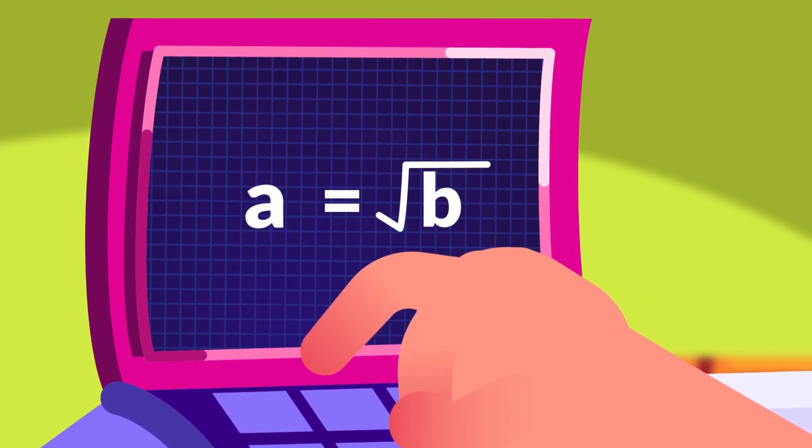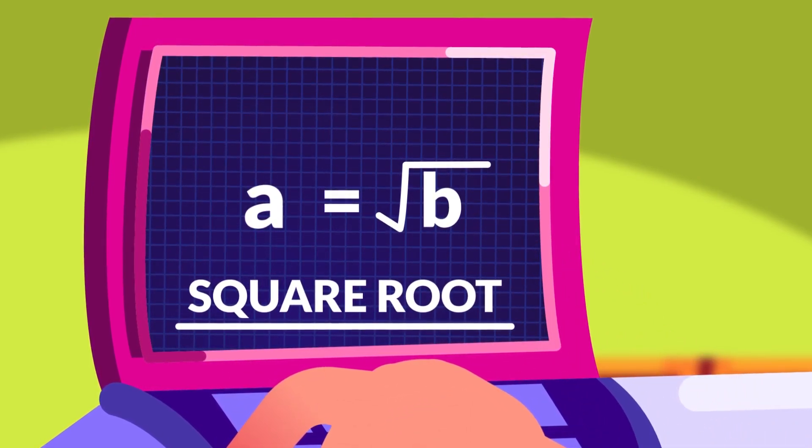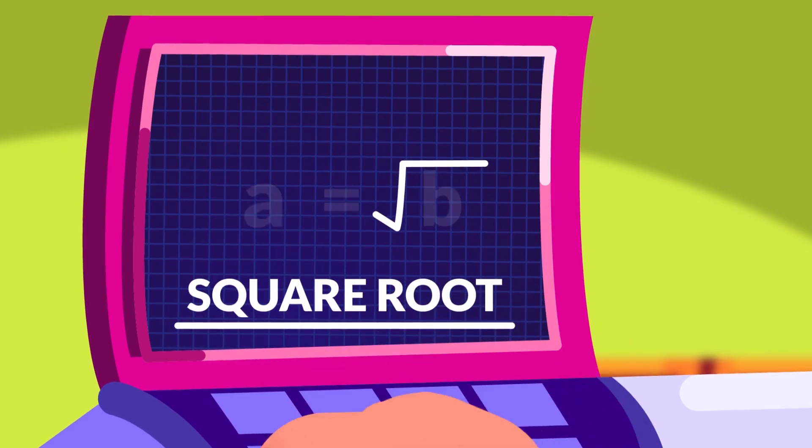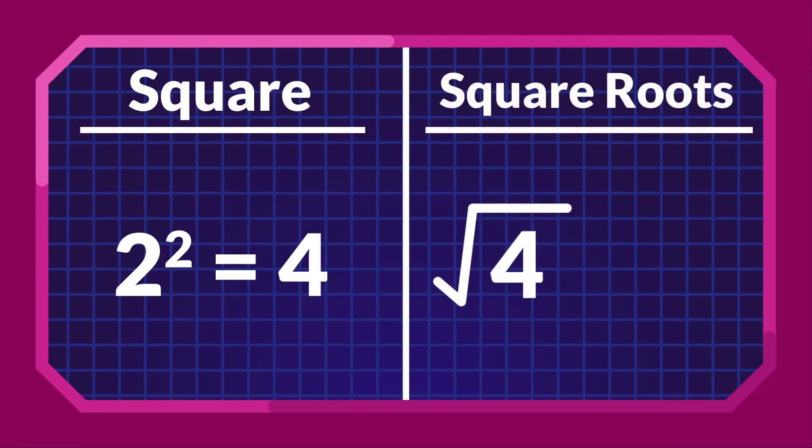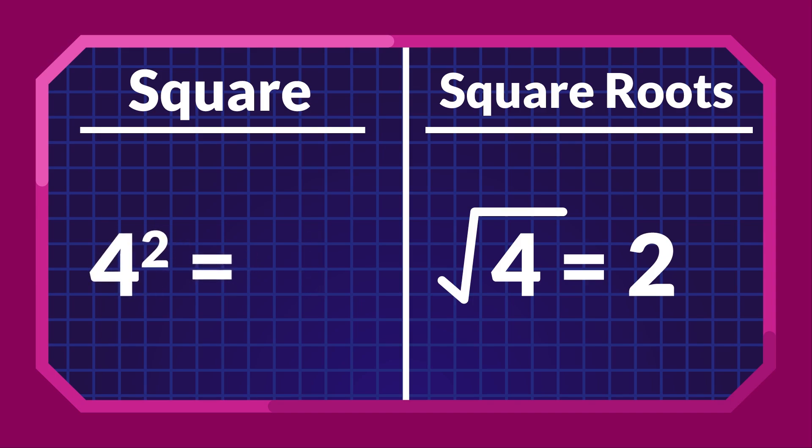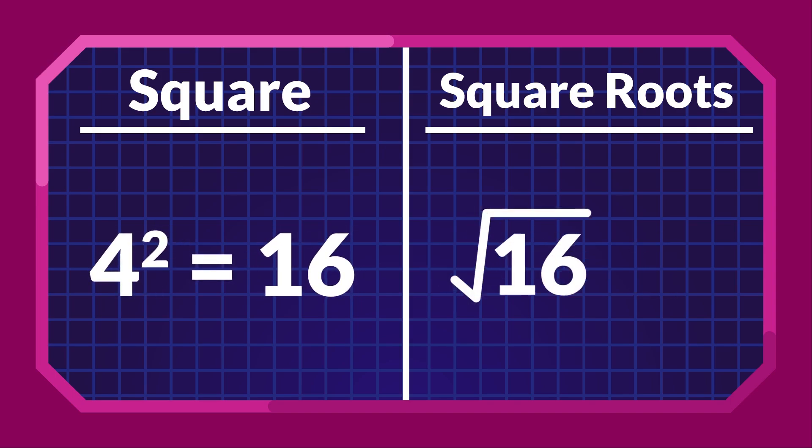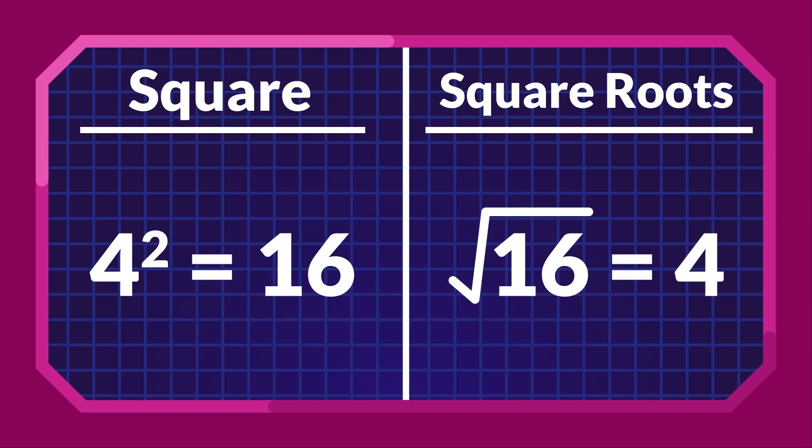Meanwhile, square roots are the inverse operation of squaring, so the number that is multiplied by itself is called the square root. A square root is represented by the radical sign. In our previous example, 2² = 4, hence we can say that 2 is the square root of 4, or √4 = 2. Conversely, 4 is the square root of 16, therefore √16 = 4.